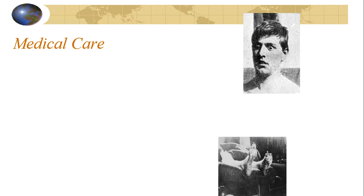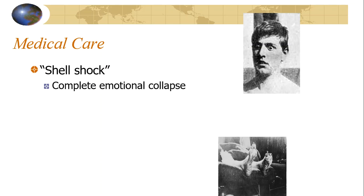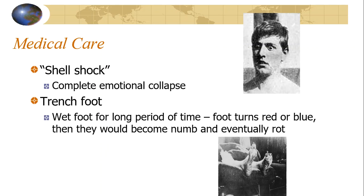Some medical conditions that arose during this time: shell shock, which is a complete emotional collapse; and trench foot, where wet feet for a long period of time cause the foot to turn red or blue, become numb, and eventually rot off. When Forrest Gump first goes to Vietnam, he's told to keep his feet dry and his socks clean — that's because of trench foot. Keeping feet dry to prevent blisters and rot was carried forward into World War II and especially Vietnam, where they were fighting in the jungle. The Red Cross was also instrumental during this time, stemming from the American Red Cross created by Clara Barton during the Civil War.